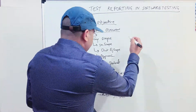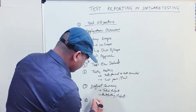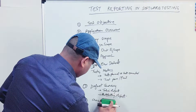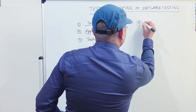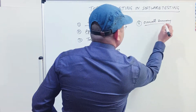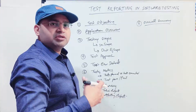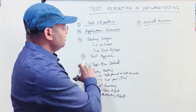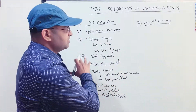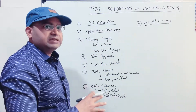The last important section is the overall summary. In this section you summarize the overall testing and share what you as a team or test lead feel about the overall aspects of testing and the quality of the release that has just been tested. These are the key sections that need to be included in the test summary report.